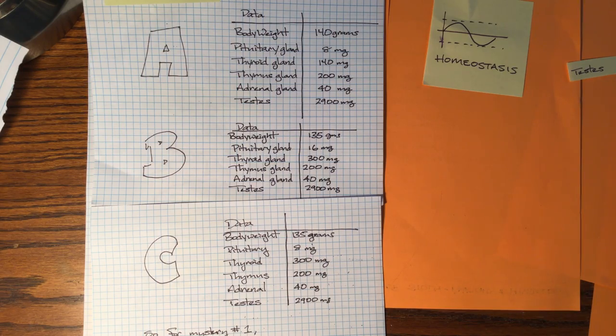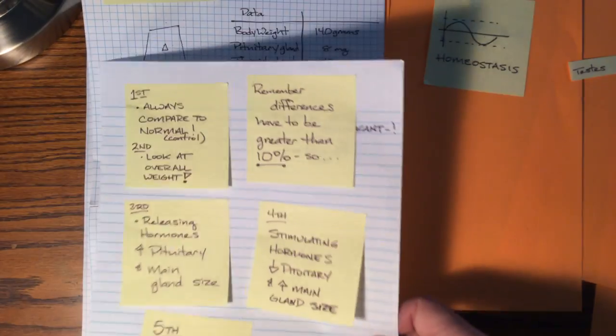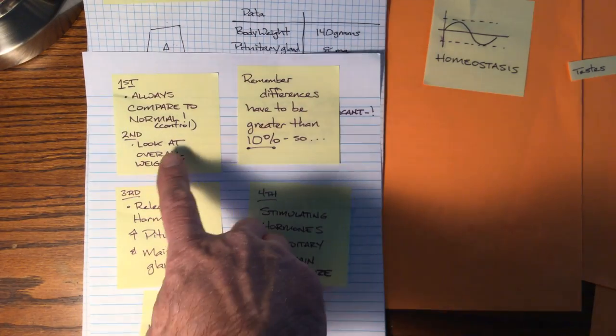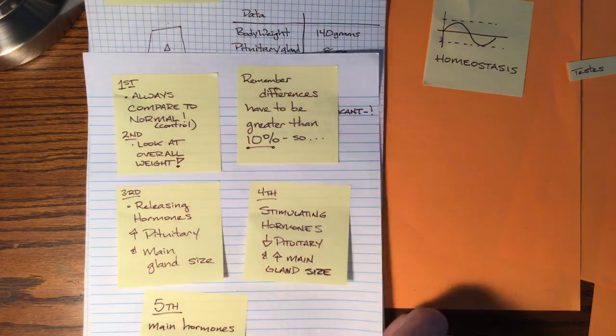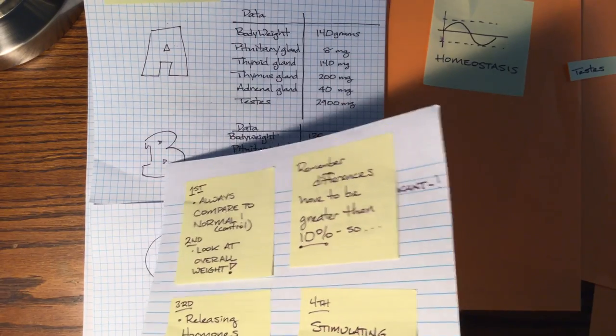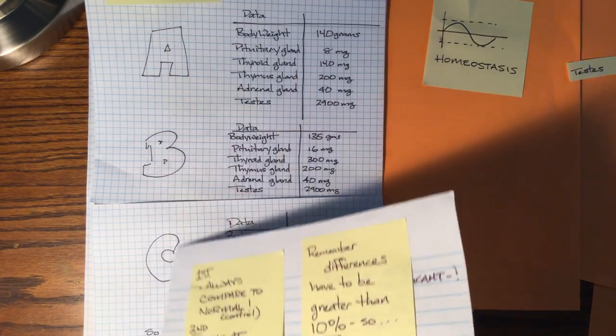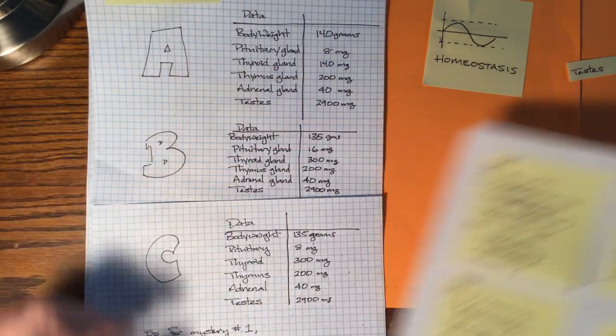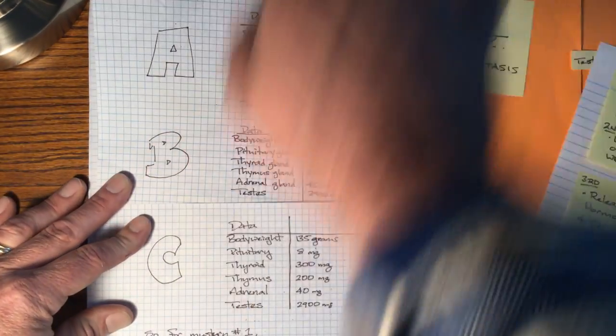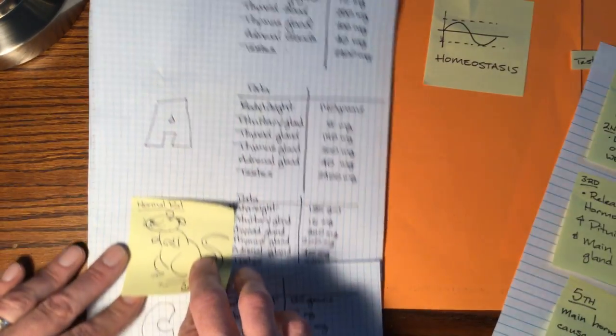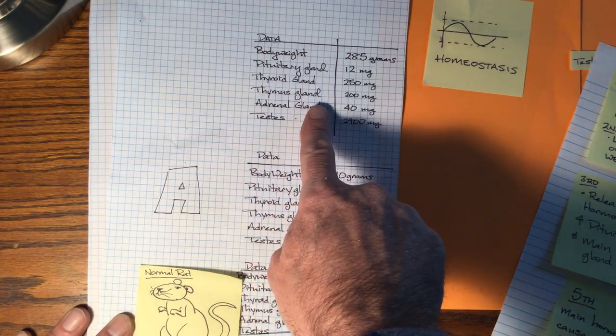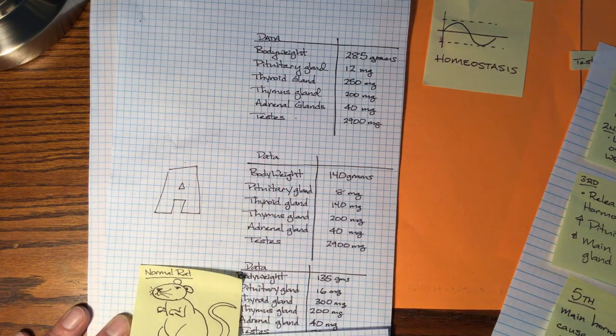So here's how you learn how to solve these problems. Number one, you always compare back to the normal. So I'm not going to compare rat A and rat B. I'm not going to compare rat A and rat C. I'm always going to compare rat A to the control, to the normal rat, to the rat whose numbers were right here. And you might want to pause and write those down.